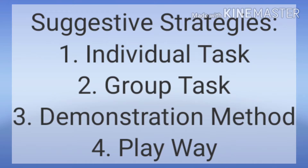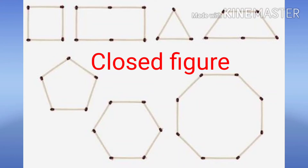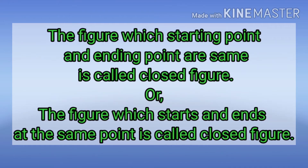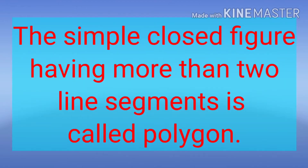In this video we will learn some basic concepts related to this lesson and try to understand area and perimeter. First of all, do you know about closed figures? A closed figure is one whose starting point and ending point are the same — the figure which starts and ends at the same point.